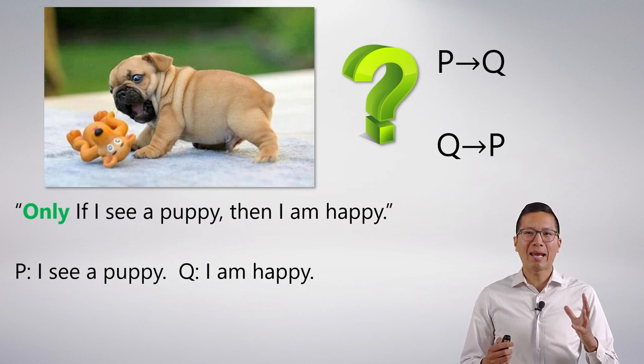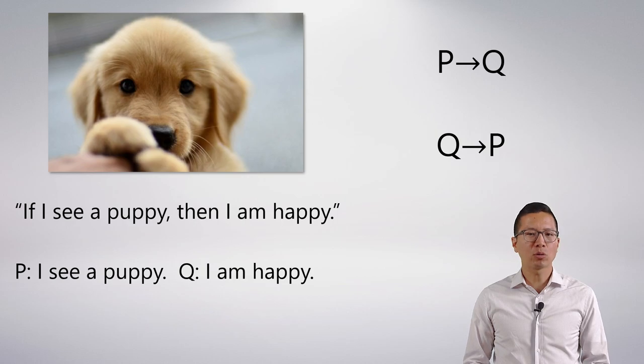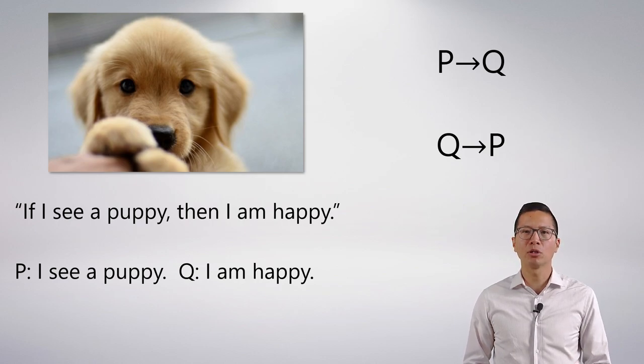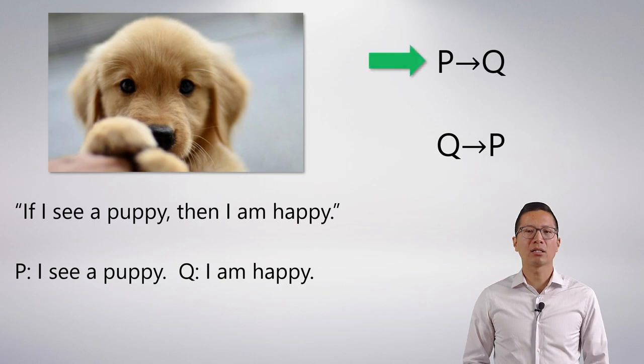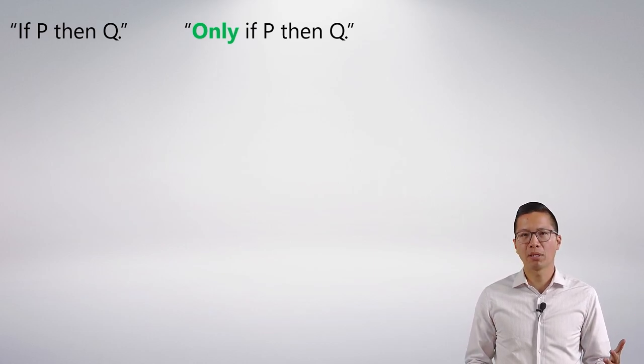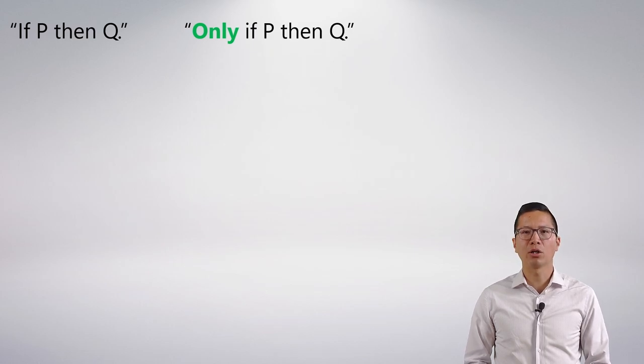Well before we actually answer the question, we can look at a different statement, which is a very straightforward one. It just says, if I see a puppy, then I'm happy. Exact same abbreviation scheme, exact same two options. And I hope we all agree that this is obvious. This has to be P arrow Q. So given that this is P arrow Q, I can naturally just ask what's the difference between a statement that says if P then Q and only if P then Q. What is the actual difference between these two?